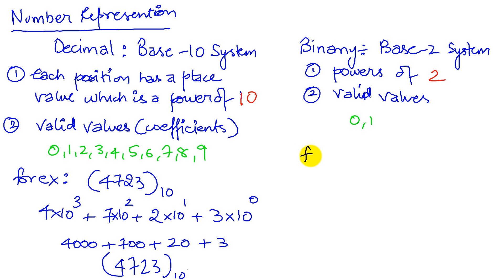So for example, if I am given a number 1101 to the base-2, it represents the coefficients 1, 1, 0, 1. And this 1 has a place value of 2 to the 0. This 0 has a place value of 2 to the 1. This 1 has a place value of 2 to the 2. And this 1 has a place value of 2 to the 3.